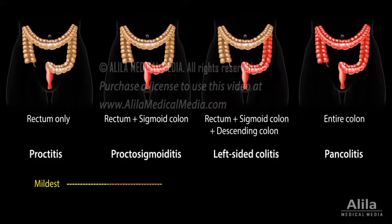Once the disease progresses to the upper colon, stools become more watery, sometimes consisting entirely of blood and mucus. The patient may have multiple bowel movements per day, often with severe cramps and tenesmus.